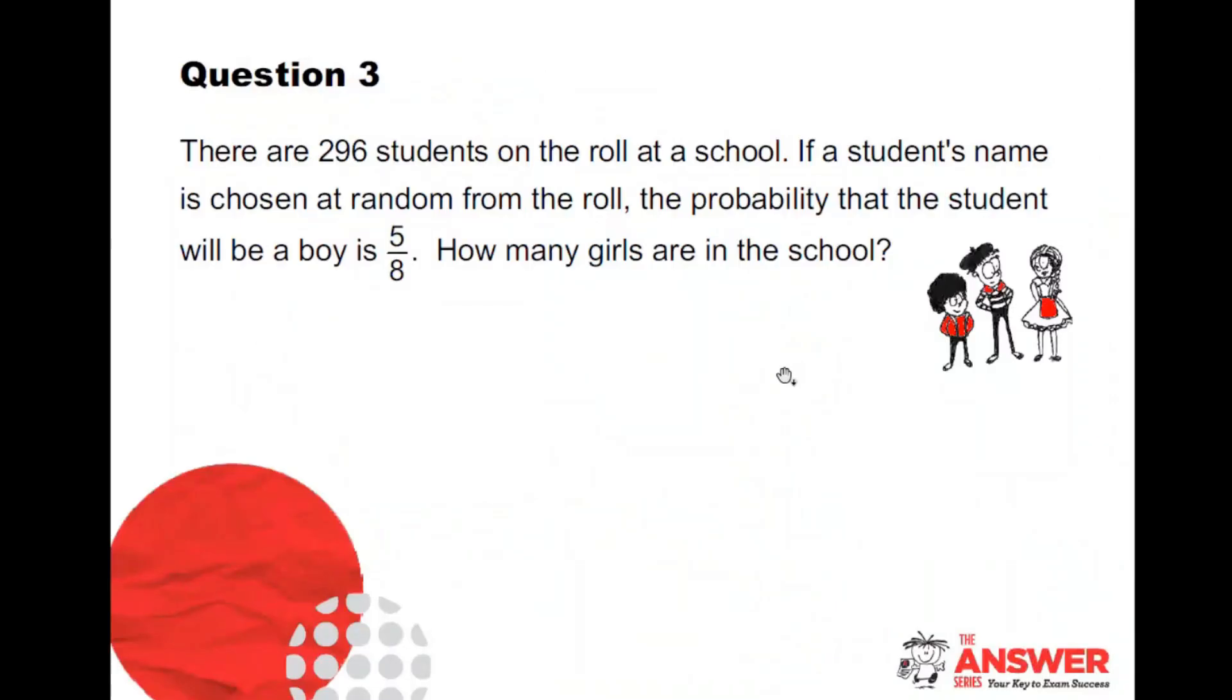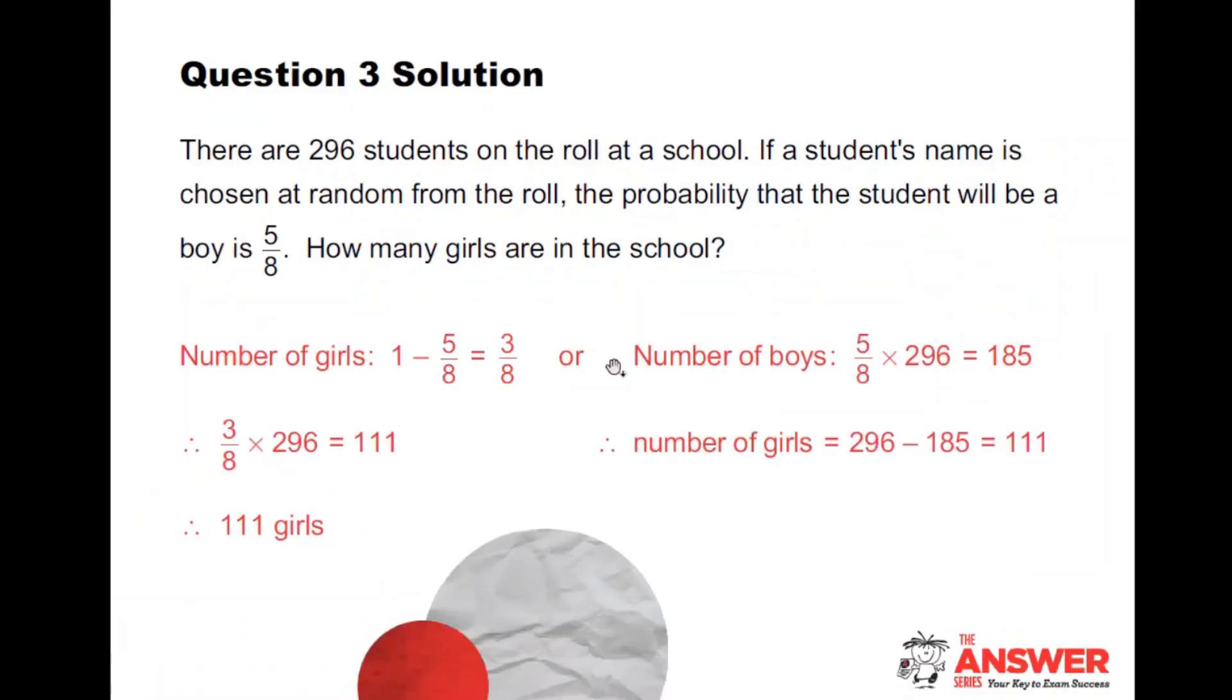Question three. There are 296 students on a roll at a school. If a student's name is chosen at random from the roll, the probability that the student will be a boy is five over eight. How many girls are in the school? You can do this in two ways. One way, if five eighths are boys, then three eighths will be girls, and three eighths of 296, which is the total, you'll get the number of girls. My second option is I can say the number of boys is five eighths of 296, calculate how many boys there are, and then subtract from the total to get the number of girls.